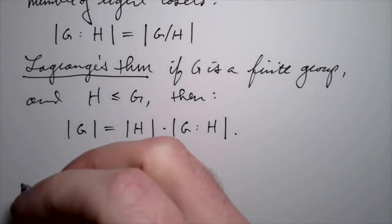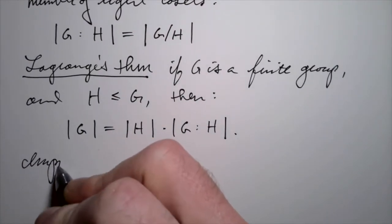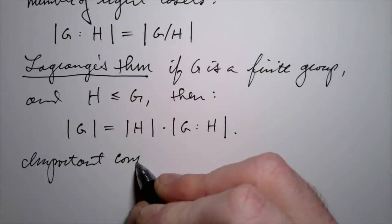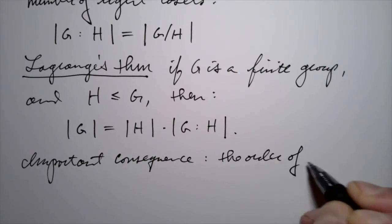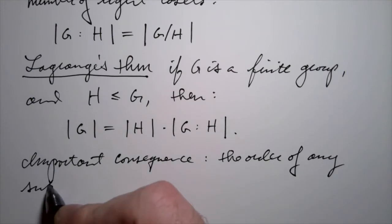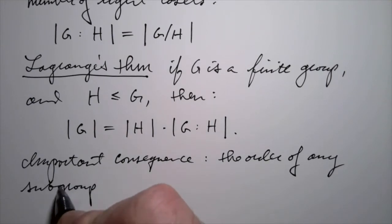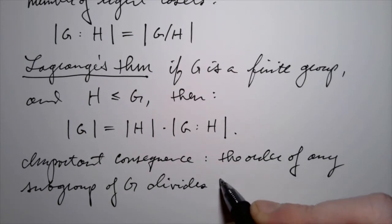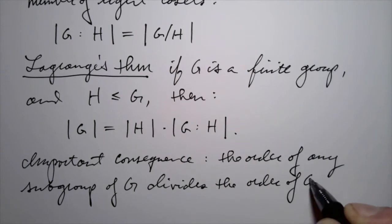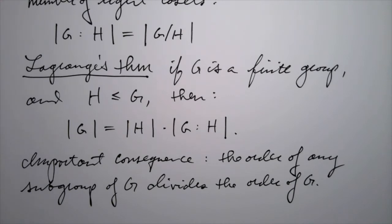Here's an immediate important consequence — we'll use this all the time. An important consequence is that the order of any subgroup of G divides the order of G. The size of a group, its cardinality, is called its order. And so the size of any subgroup divides the size of the entire group. The order of any subgroup divides the order of G.